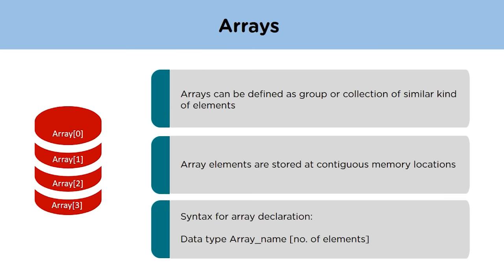Moving to arrays — arrays are one of the most important and widely used concepts in C++. An array can be defined as a collection of similar kinds of elements. The elements of an array are stored in contiguous memory locations, one after the other. Arrays make it possible to store multiple values of the same data type into a single variable. The syntax to declare an array is: first mention the data type, then the array name, and after that the number of elements inside brackets.